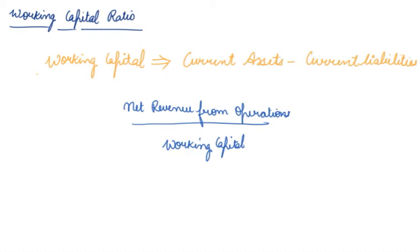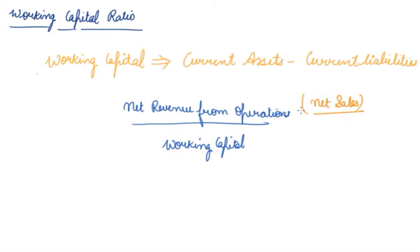Net revenue from operations is the latest name being used nowadays according to updated laws. Earlier this used to be called net sales. Now we have renamed it as net revenue from operations, though it is also still known as net sales. So net sales divided by working capital gives you the working capital turnover ratio.